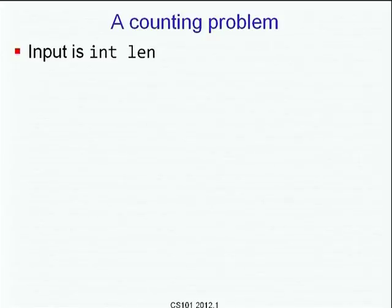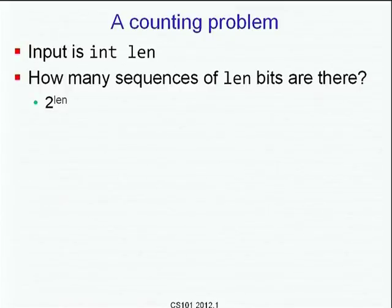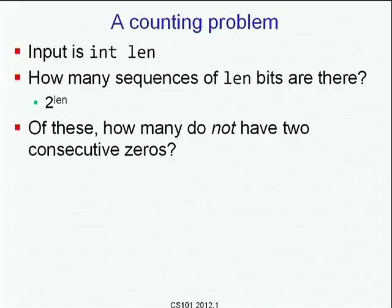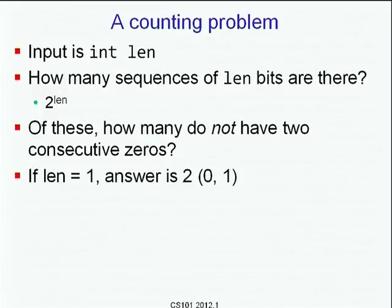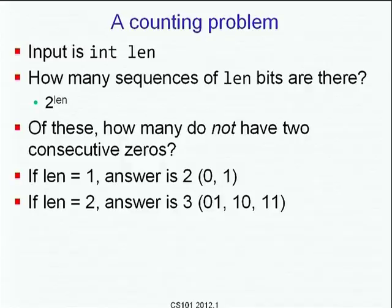Let us remember the counting problem that led to this sequence. If a bit vector sequence of bits has length n, then the number of possible bit vectors of that length is just 2 to the power n. But if we further constrain these strings so that none of them can have two or more consecutive zeros, then the number will decrease. If length is 1, there are two possible strings: 0 and 1. If length is 2, there are four possible strings but 00 is disqualified, leaving 3: 01, 10, and 11.